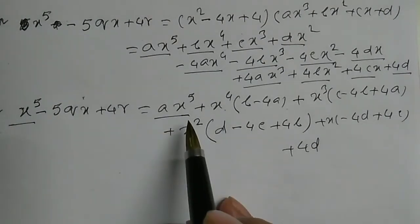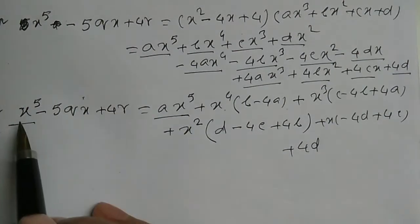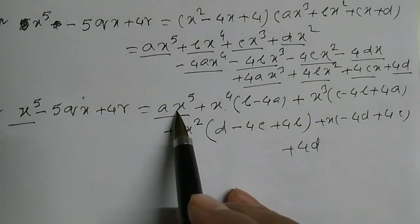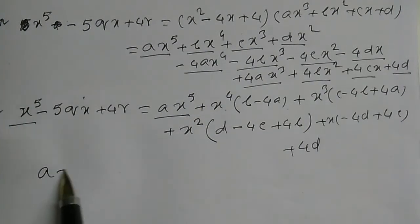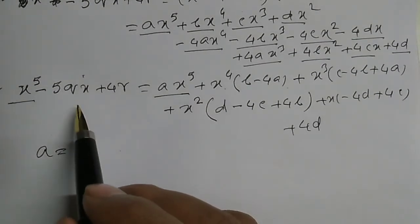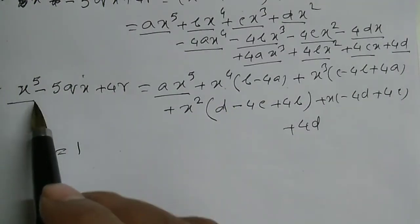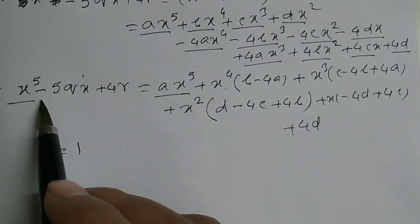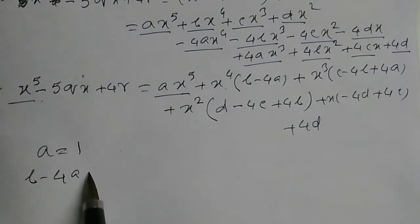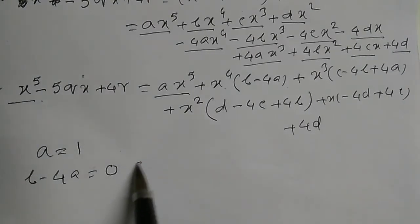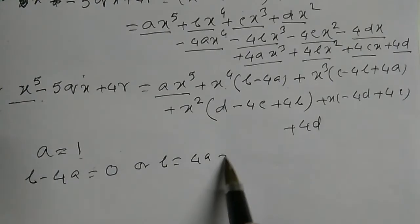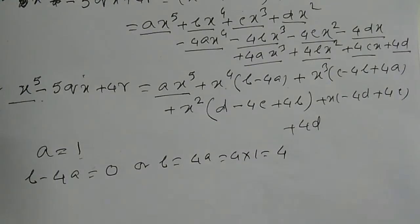Equating coefficients of x to the power 5 from both sides: the left-hand side coefficient is 1 and the right-hand side is a, so a equals 1. Equating x to the power 4: the coefficient on the left is 0, so b minus 4a equals 0, giving b equals 4a equals 4.